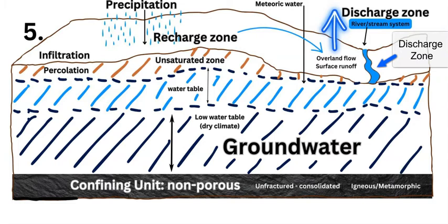As shown in the diagram, the water table at the top right merges with the river or stream system, which represents the surface expression of the water table. On the surface, the river shows you where the water table is, and any higher-elevation land around it will have groundwater and overland flow moving down the gradient toward the river.